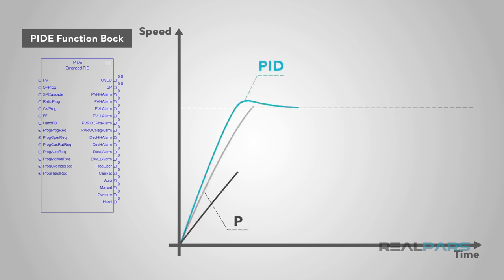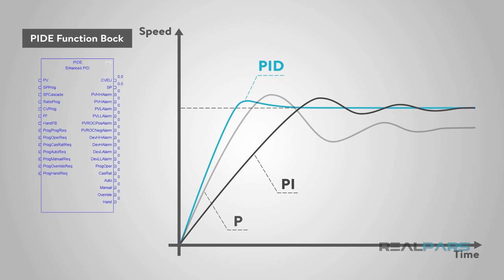If you enjoy function block programming, you will benefit from using this enhanced version instruction over the standard PID instruction for a few reasons. The PIDE instruction offers a built-in auto-tune feature which works reasonably well. The PIDE is programmed using a function block and not available for ladder logic programming — it uses the velocity form of the PIDE algorithm, which is especially useful for adaptive gains or multi-loop and cascade process control. The PIDE instruction can be switched between program and operator modes, provides full bumpless transfer into and out of cascade mode, and has more fault handling selections.